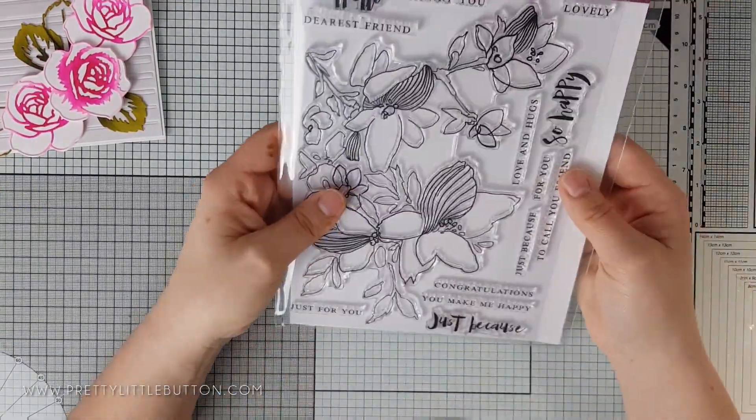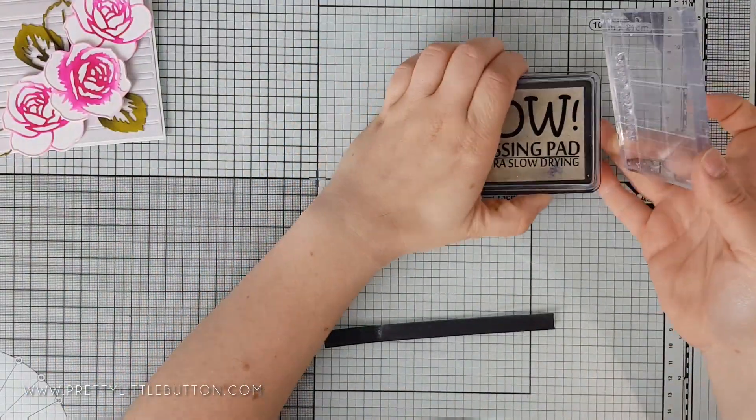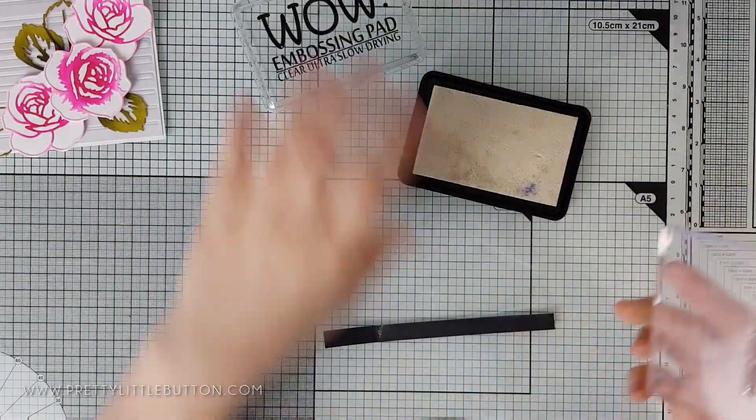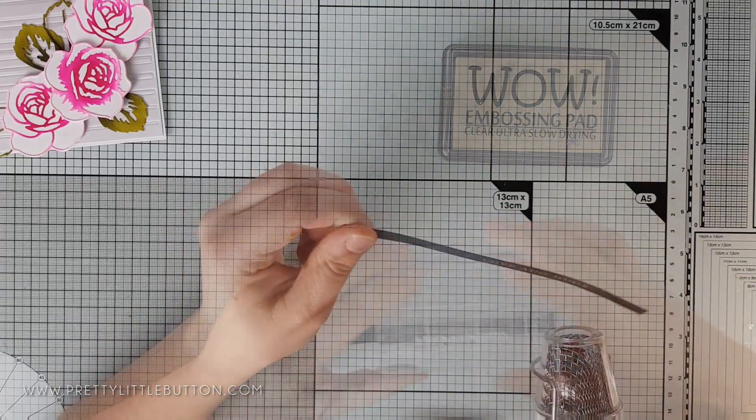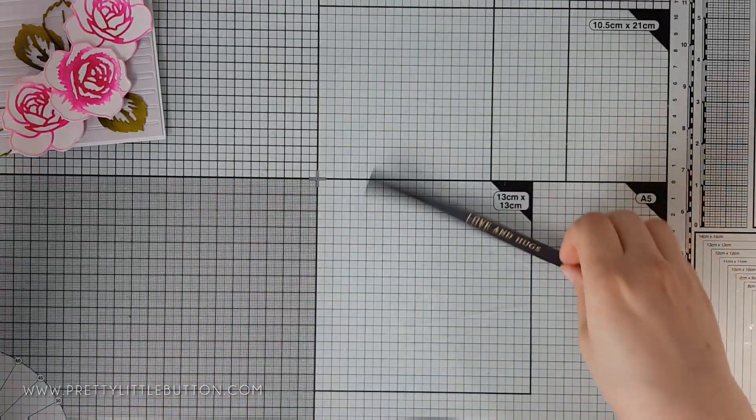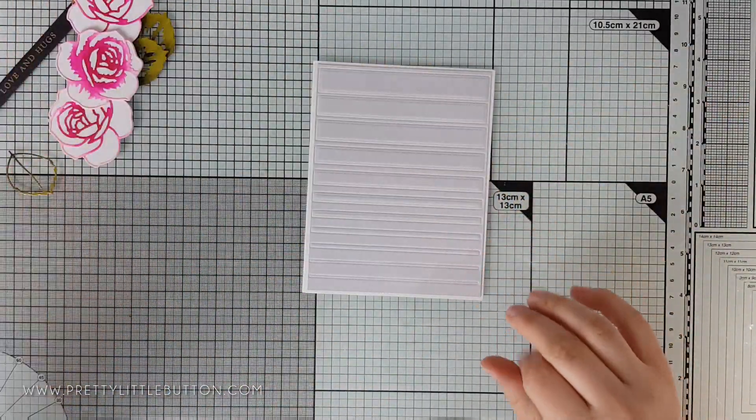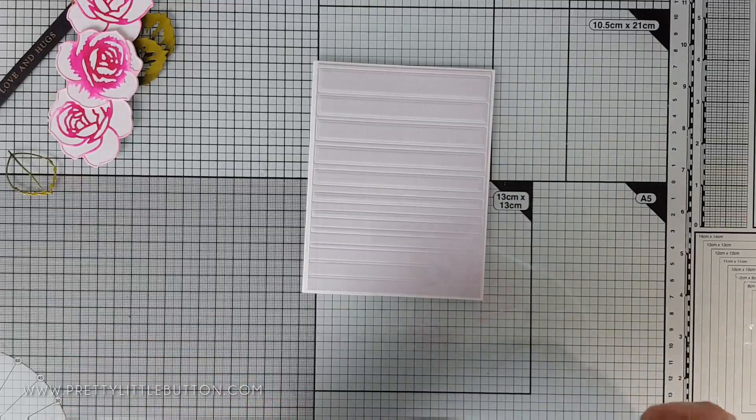I added a heat embossed sentiment from the Sketchy Floral stamp set. This was heat embossed on a black strip in Metallic Gold Rich Pale from Wow embossing powder, and this tied in beautifully with the gold paint splatter in the background. Also, the black cardstock really allowed the sentiment to stand out from the bold colored florals.